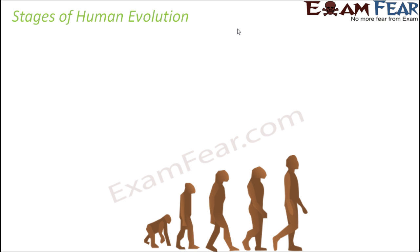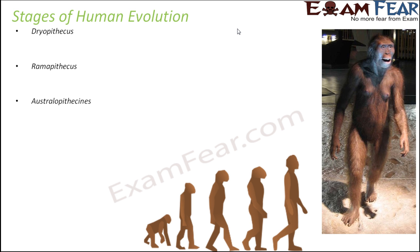Here we will look at the various stages of human evolution. The different stages are: Dryopithecus, Ramapithecus, Australopithecus, Homo habilis, Homo erectus, and finally Homo sapiens. There were also others like Neanderthals within this sequence, but the focus is on how things gradually improved and changed with each stage.